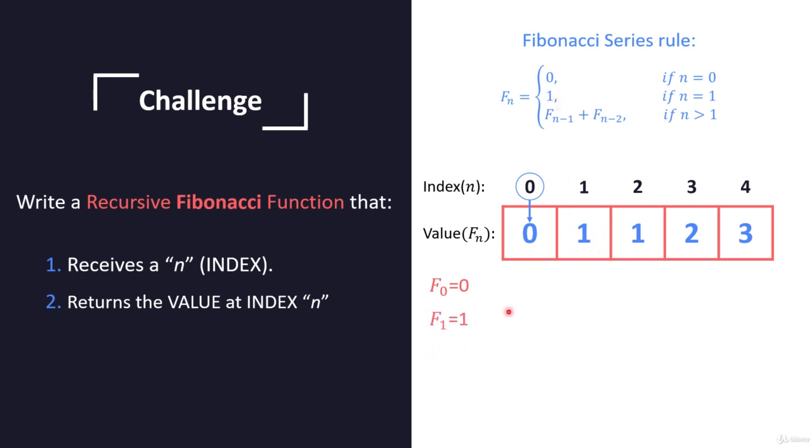And then we know that we found out that F of one is one and F of two will be equal to F one plus F zero. So F one plus F zero will give us one plus zero, which is a total of one. That's basically the series of Fibonacci.